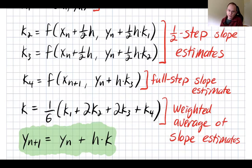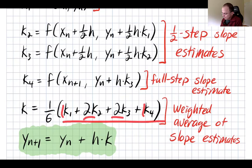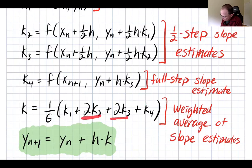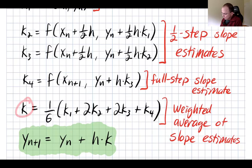These weights come from a Taylor series argument, or as the textbook mentions, from Simpson's rule for numerical integration. It's a weighted average — the weights are 1, 2, 2, 1, which add up to six, so we divide by six. We're putting twice as much weight on the half-step slope estimates, and less weight on the initial and final estimates. That gives us our final slope estimate K, and then we take a full step using this K. That's the method.